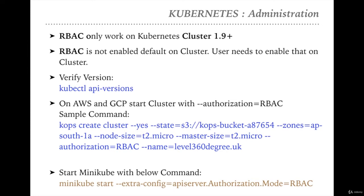I'm not going to show this demo on Minikube because Minikube is for development environments installed on a single machine. We need the actual implementation of RBAC when executing the Kubernetes cluster on AWS, where it's being used by multiple users. So I'm going to demonstrate this on the AWS cloud, first starting the cluster with '--authorization=RBAC', then verifying with 'kubectl api-versions'.